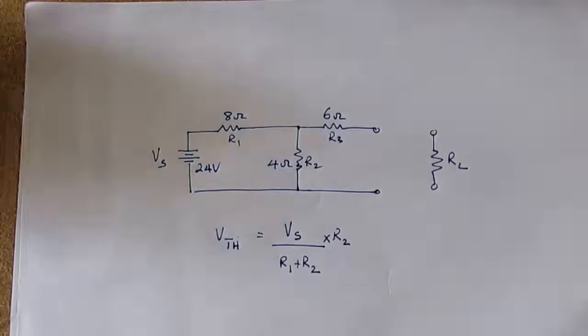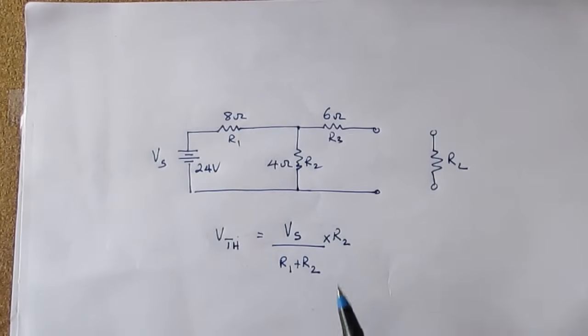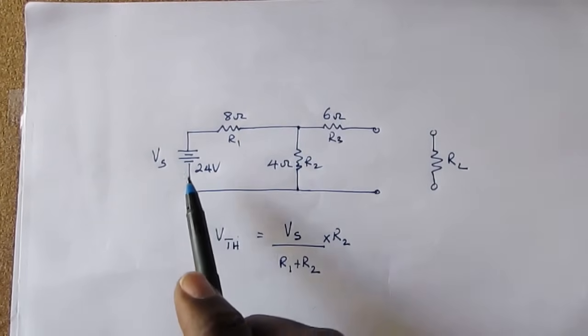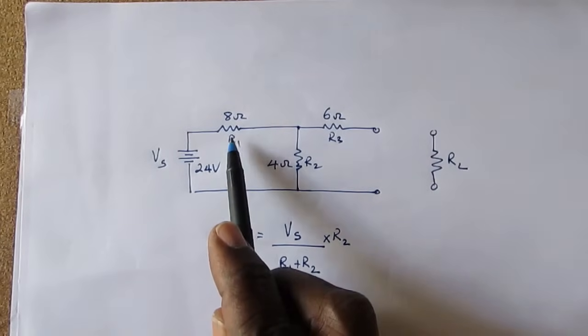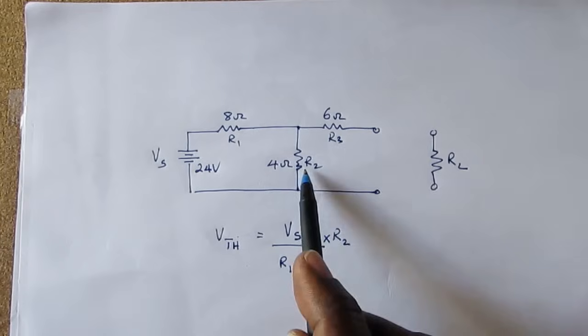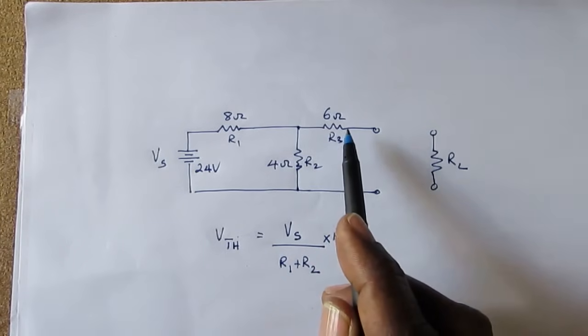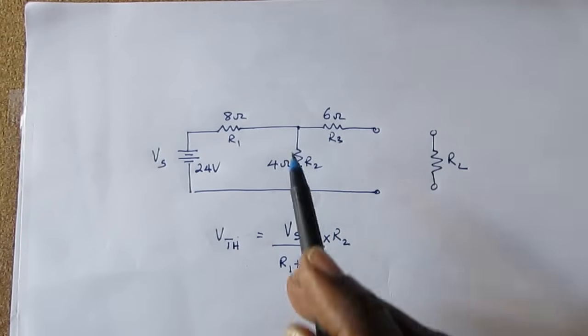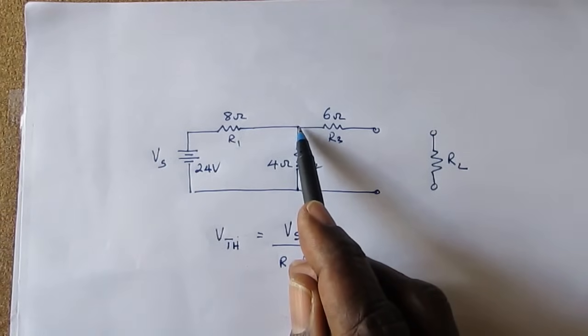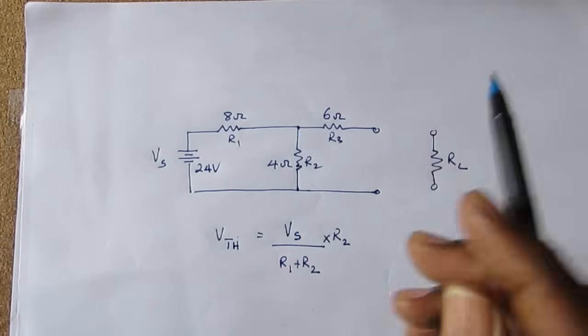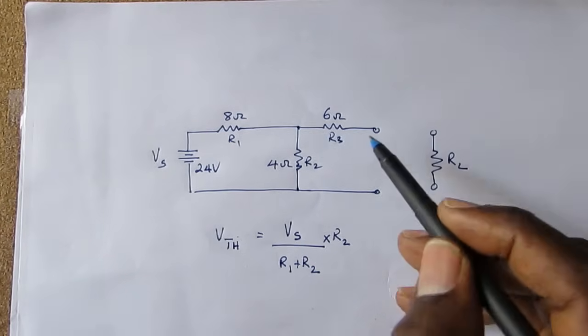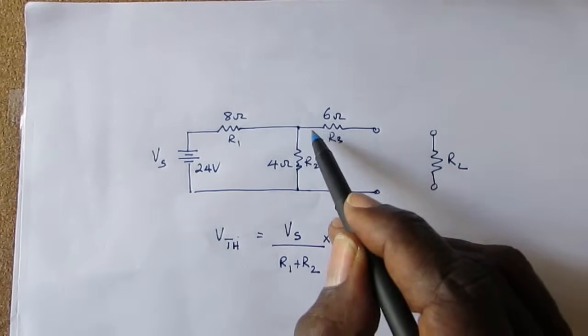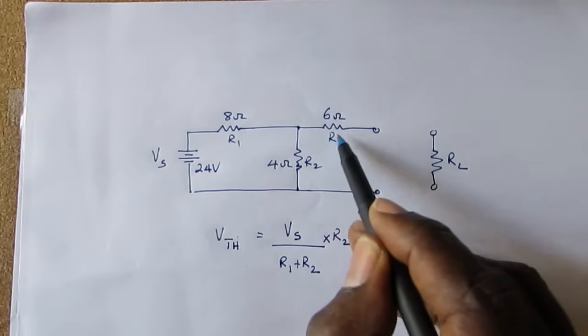Let us now calculate the Thevenin voltage for this circuit. V supply of 24 volts, R1 equals 8 ohms, R2 equals 4 ohms, R3 equals 6 ohms. Remember, the Thevenin voltage, which is the voltage at the open load, is the same as the voltage at this point because there is no current flow in R3.